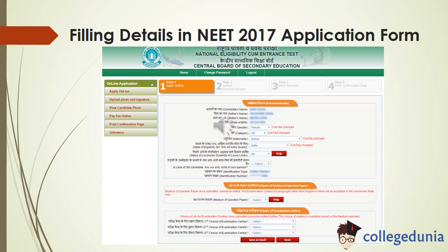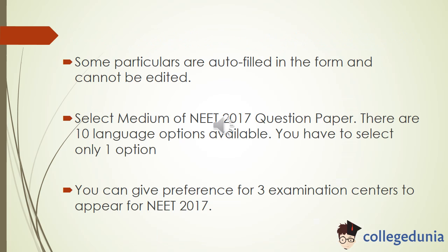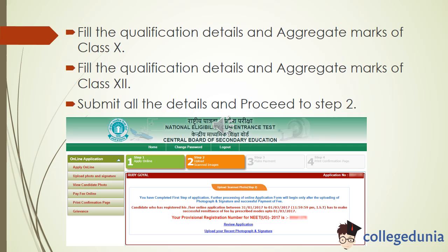Now you have to fill the details in the NEET 2017 application form. Some particulars are auto-filled in the form and cannot be edited. You have to select a medium for the NEET 2017 question paper — there are 10 language options available and you have to select only one. You can also give preferences for three examination centers. Fill the qualification details and aggregate marks of placement.